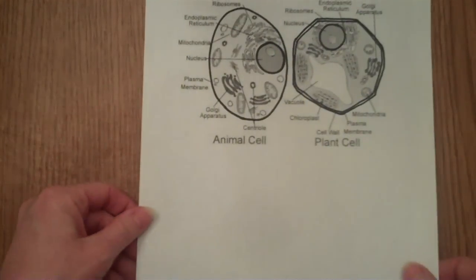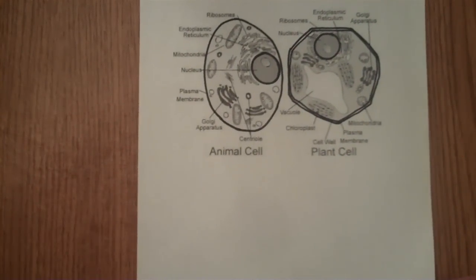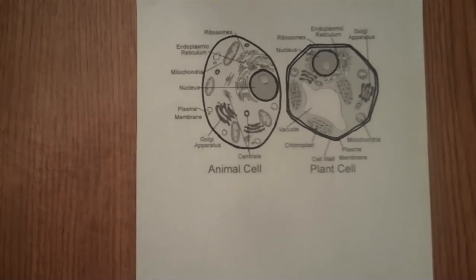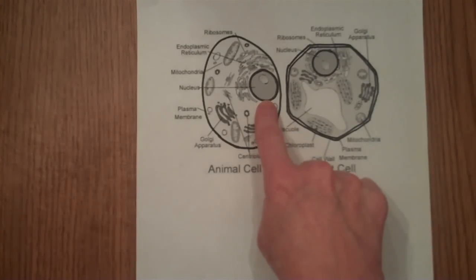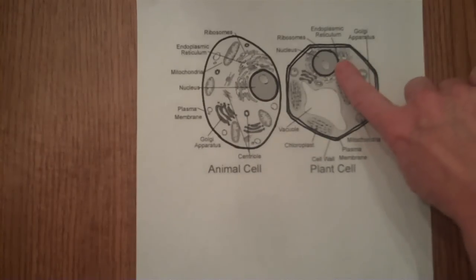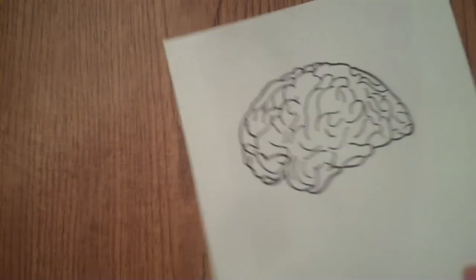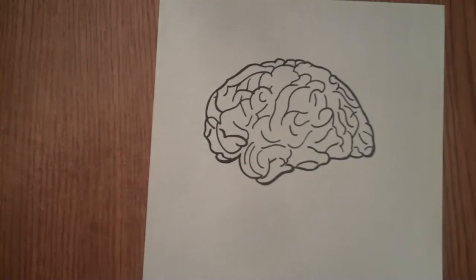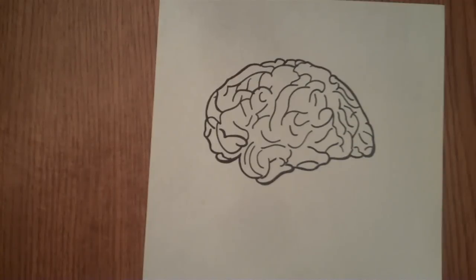The nucleus is a large organelle inside every plant and animal cell — well, except for red blood cells, but that's a different video. The nucleus in the animal cell, the nucleus in the plant cell. The nucleus is known as the brains, or the control center of the cell, because it has the instructions for how to do everything that the cell needs. The instructions are located in the genetic material contained inside the nucleus.